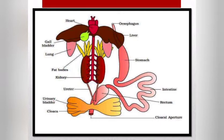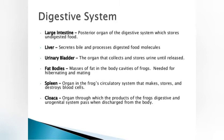The internal morphology of the frog includes the respiratory system, digestive system, excretory system, and reproductive system. The digestive system contains gallbladder, esophagus, liver, stomach, intestine, rectum, cloacal aperture, urinary bladder, ureters, and cloaca.